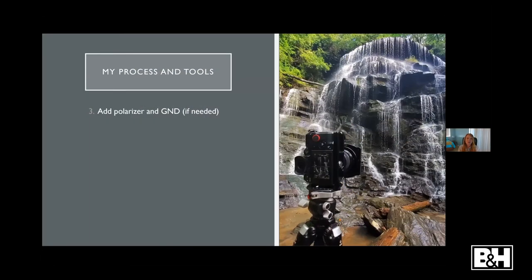A little bit about my process. First, I always add a polarizer and a graduated filter if needed. Anytime you have water in your image, you should immediately be thinking about whether a polarizer is going to be helpful — there's a really good chance it will. A polarizer cancels out glare, so when you apply it to waterfall images, you're removing glare from the rocks and water so you can really see the true saturated colors of the scene. NiSi has recently come out with a landscape polarizer which I use and absolutely love — it does a really great job of punching up those greens and making the scene feel very lively.